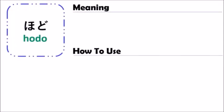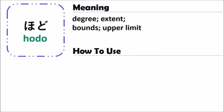Today we will learn the grammar of hodo. The grammar of hodo means degree, extent, bound, or upper limit — meaning the upper limit or extent of degree, that is, what your ability can do.